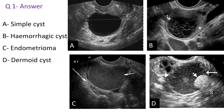The answer to question one: picture A is a simple cyst, B is a hemorrhagic cyst, C with a ground glass appearance is suggestive of endometrioma, and picture D with mixed echogenicity, echogenic nodule, and hypo-acoustic shadow is suggestive of dermoid cyst.